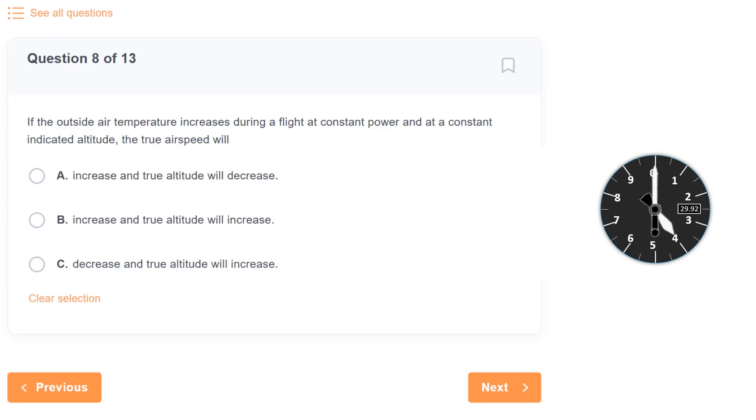The altimeter works by sensing changes in air density. A lower density equates with a higher altitude. So many of us, me included, figured that higher temps cause lower density, which causes the altimeter to read higher. In order to keep the altimeter at a constant altitude, like the question says, we need to descend, which puts us at a lower true altitude. So we answer A here. True airspeed increases while true altitude decreases.